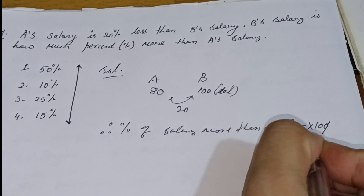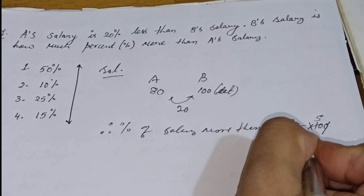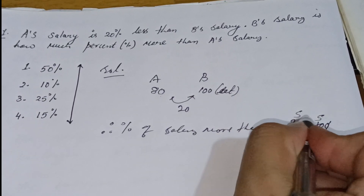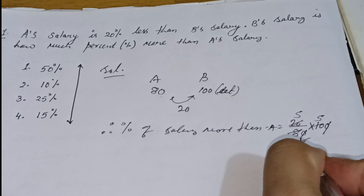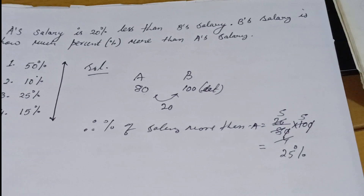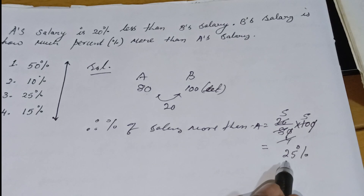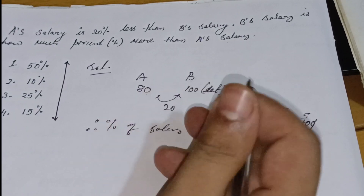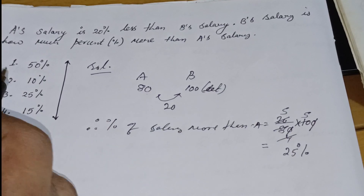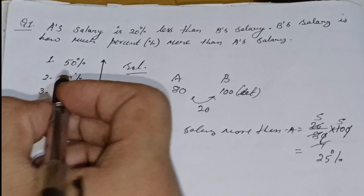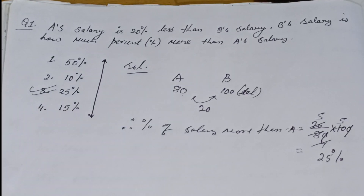Let's start with number 7: 8 by 6 is 2, 5 to 10. Then 4 times 5 is 20. 5 into 5 is 25. So we will find the answer to 25 percent. If we check the options, option number 3 is correct. So 25 percent is the correct answer.